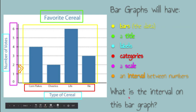So what is the interval in this bar graph? The interval is one, because it's going up by ones.